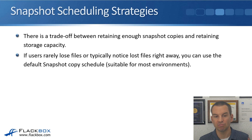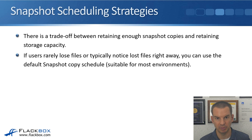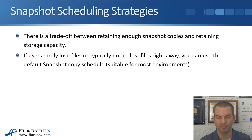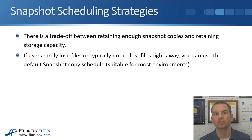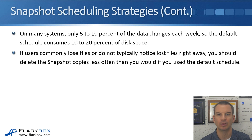If users rarely lose files or typically notice lost files straight away, you can use the default snapshot copy schedule, which keeps 10 snapshots as you saw in the previous lecture, and that is suitable for most environments. However, not all environments are typical, so you do need to tweak this sometimes. Let's talk about why you would need to do that and where.